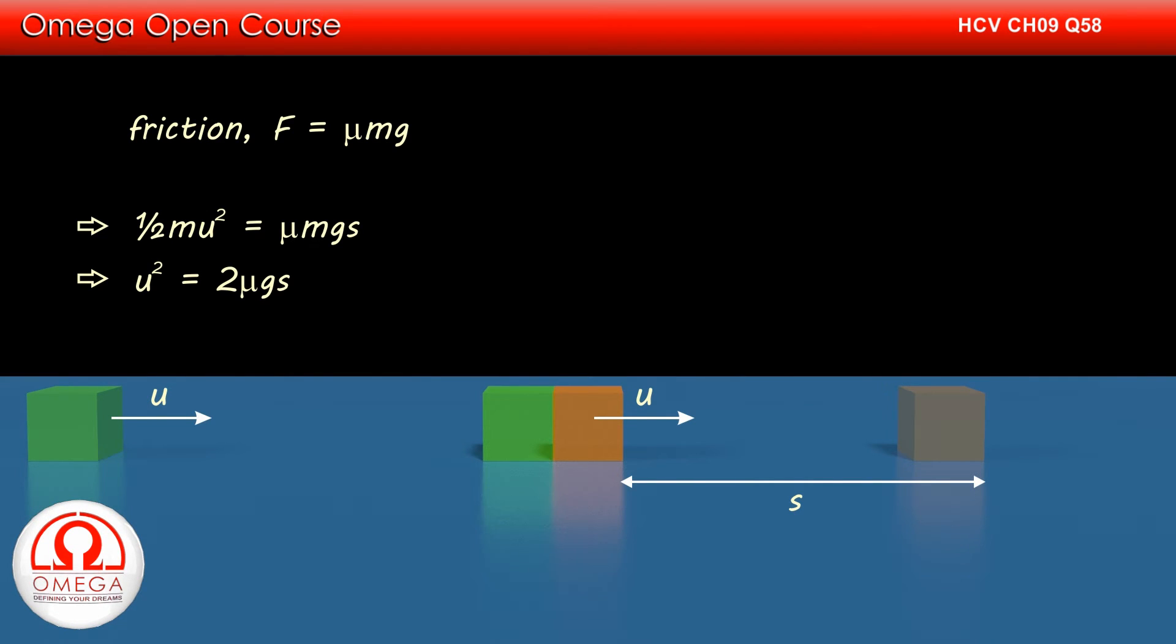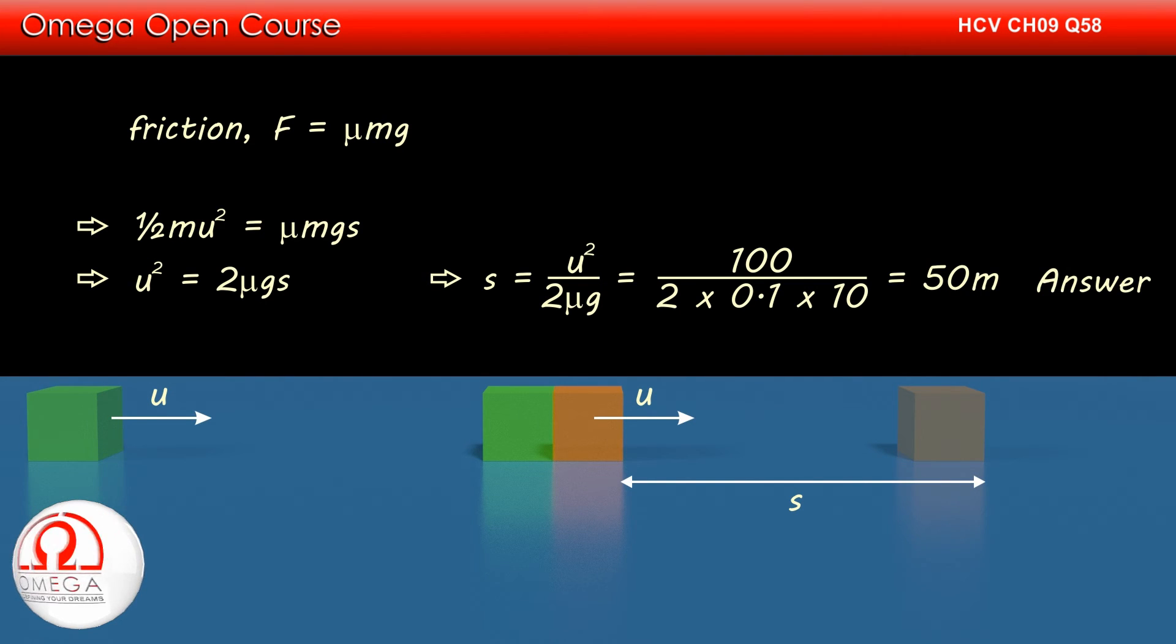Solving for s, we get s is equal to u² by 2μg. Putting the values, we get 100 divided by 2 into 0.1 into 10 or 50 meters. This is answer to part A of the question.